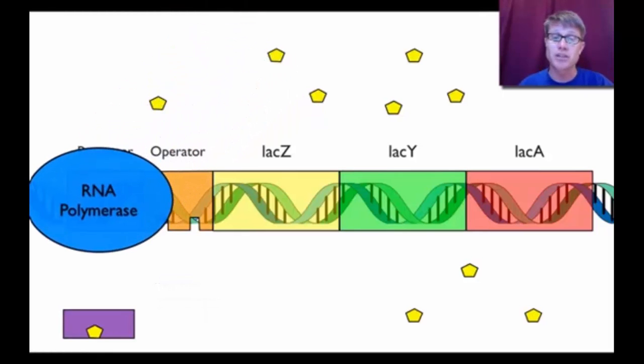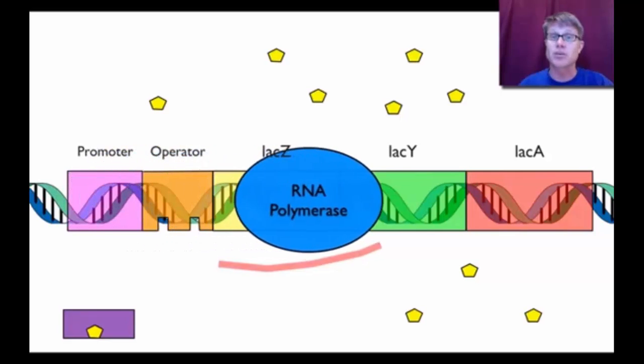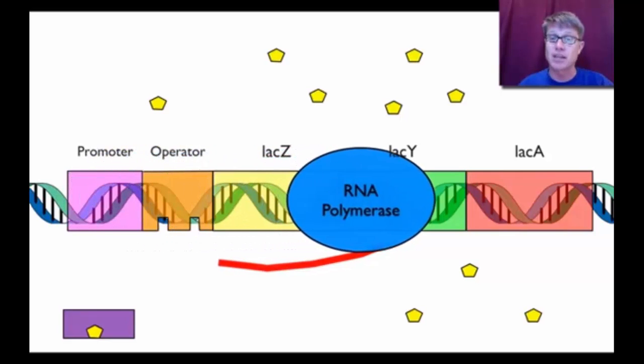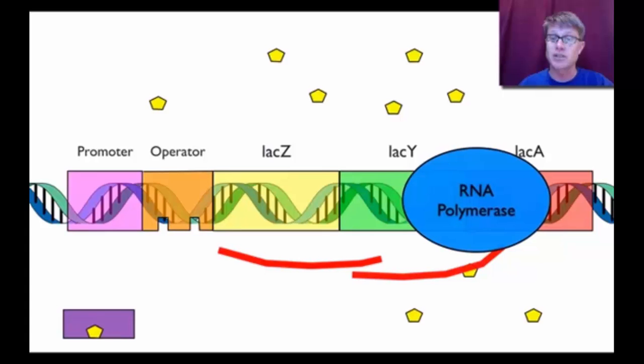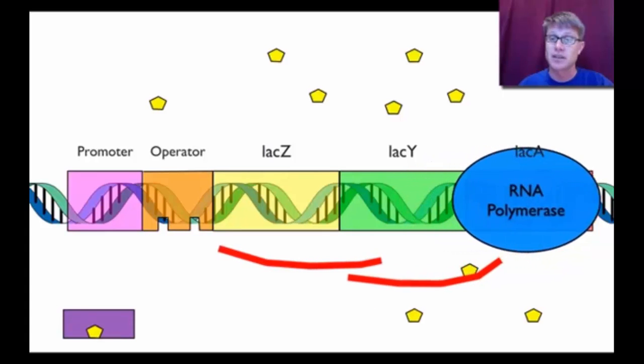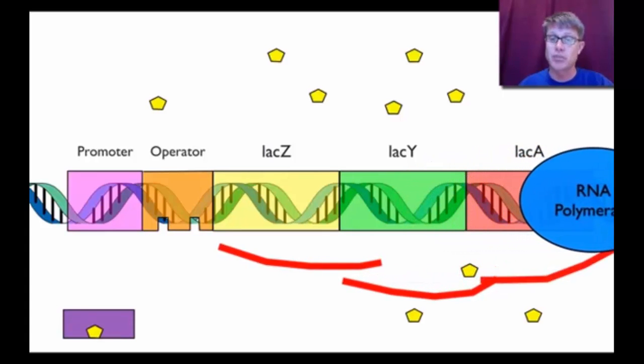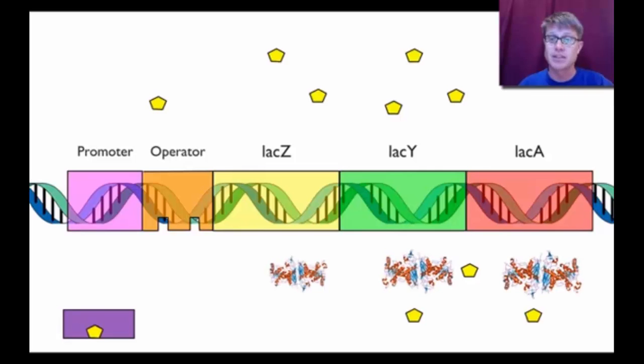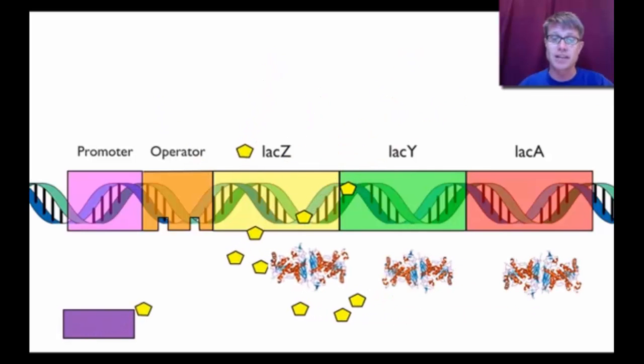RNA polymerase can fit. There's no repressor. RNA polymerase is going to run down. It's going to make each of the messenger RNAs for each of those lac genes. Each of those are going to make a protein. And each of those are going to break down the lactose. So we can deal with the lactose and we can metabolize that lactose.